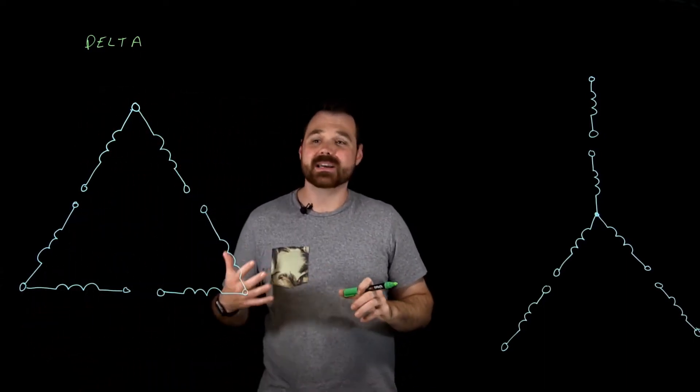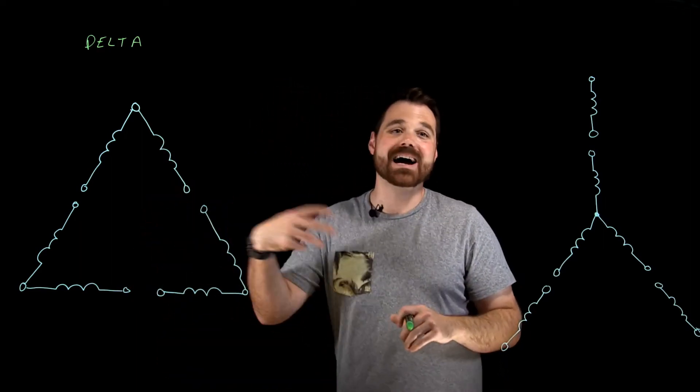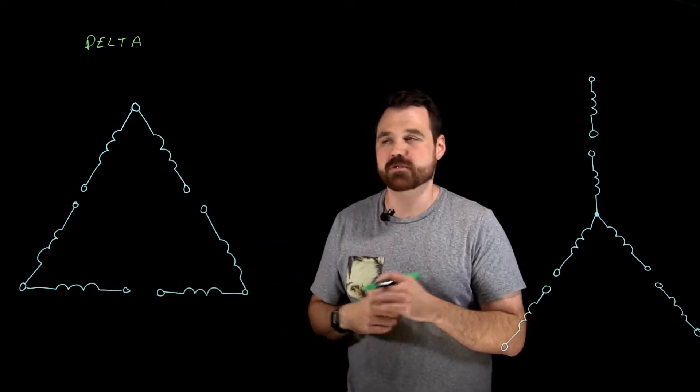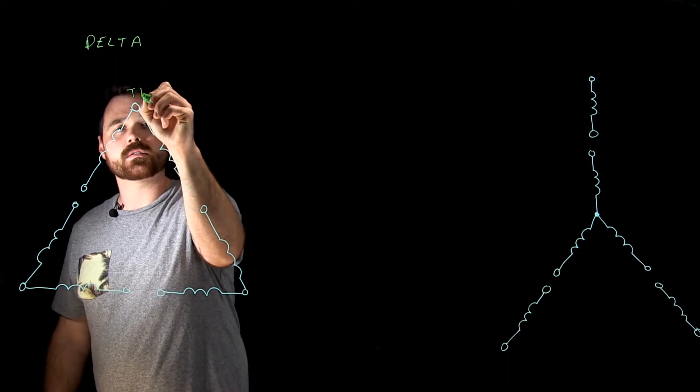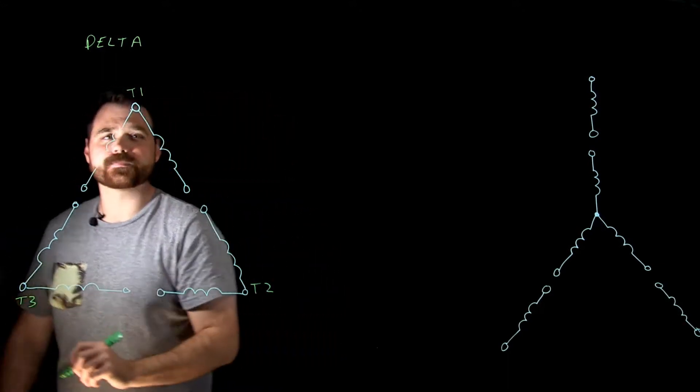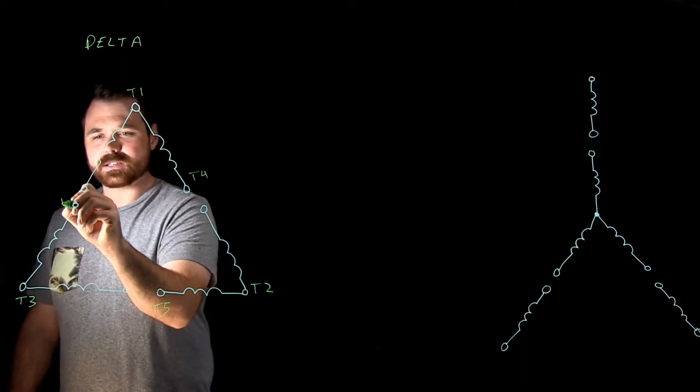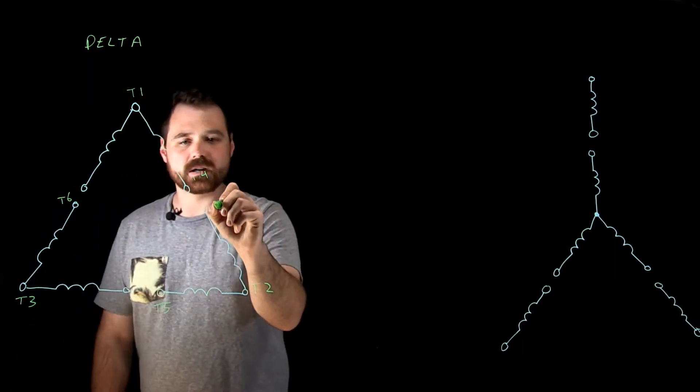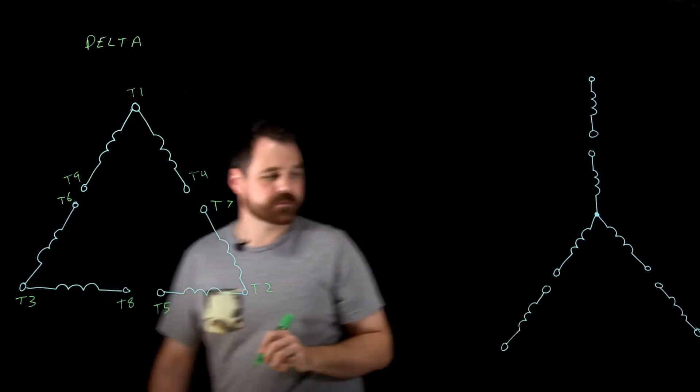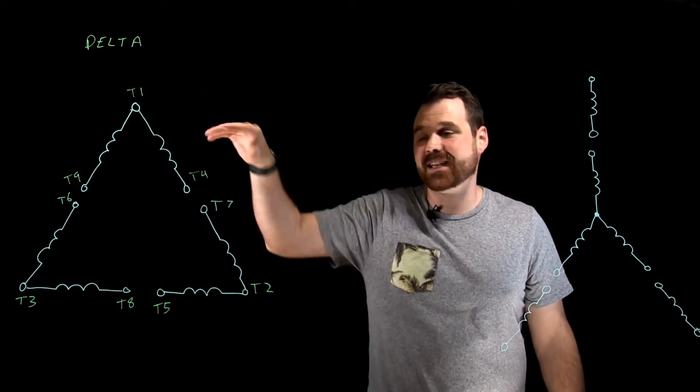So this nine lead delta motor has six windings built into it, wired at the factory. I have nine of what would be twelve leads. I have nine of them in my junction box. So I have T1, T2, T3, T4, T5, T6, T7, T8, T9. Now those would be my NEMA terminal identifiers on my nine lead delta.